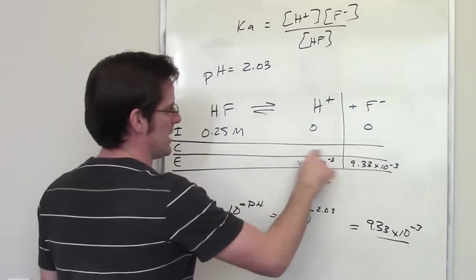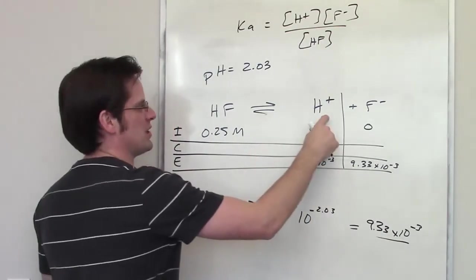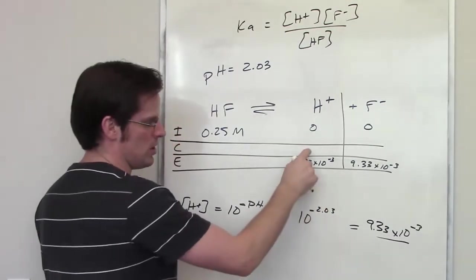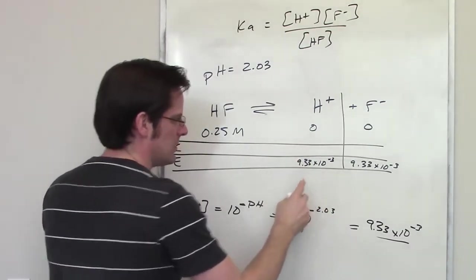Well, I have to determine what the change is going to be. My H+ concentration was 0 at the beginning, and it ends up being 9.33 times 10 to the negative third at the end. So what was the change?